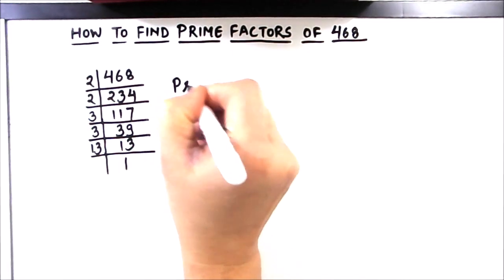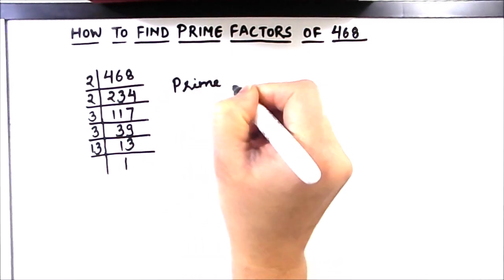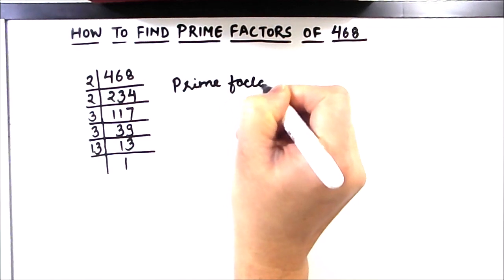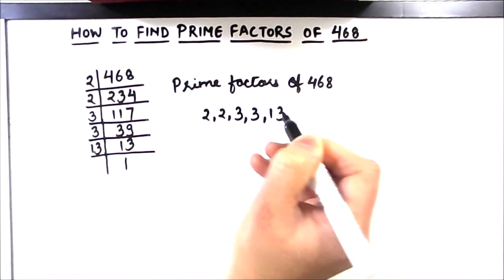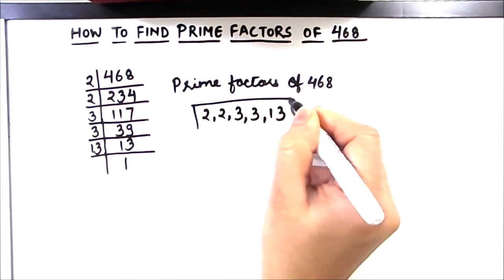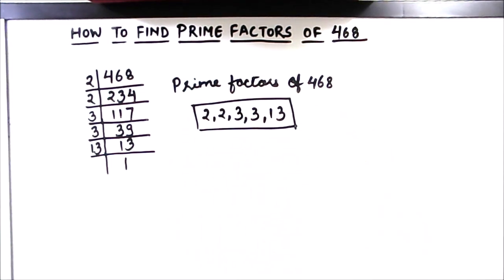So prime factors of 468 are 2, 2, 3, 3, 13. These are all the prime factors of 468.